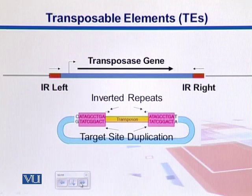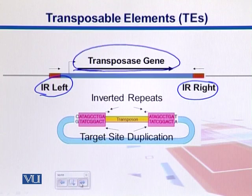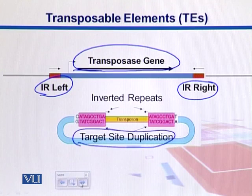Here we see the structure of an insertion sequence — IS elements. We have inverted repeats which are anti-parallel, or facing each other. We have a transposase gene, which gives the transposition properties to this transposable element. Another distinction is that when they get into the host genome, they cause target site duplication — normally they create sticky ends in the host genome, and later on when the complementary nucleotides are formed, they become those duplications.